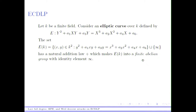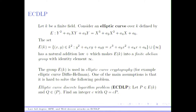Let me start with the definition of the elliptic curve discrete logarithm problem. Let K be a finite field, and consider an elliptic curve over K defined by an equation of the form Y² + A1·XY + etc., where A1 up to A6 (without A5) are constants in K. The set E(K) of K-rational points forms a finite abelian group if you also add the point at infinity, with identity element infinity. The group E(K) can be used in cryptography — the field of elliptic curve cryptography relies on the assumption that the elliptic curve discrete logarithm problem is hard.